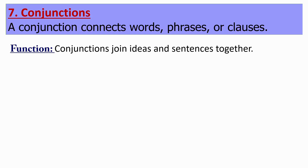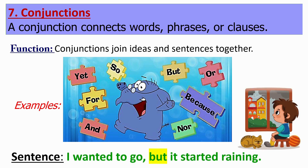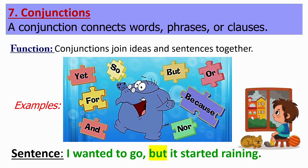Now let's check what are conjunctions. A conjunction connects words, phrases, or clauses. Conjunctions join ideas or sentences together. For examples: yet, so, but, or, because, nor, and, for, etc. Now let's check a sentence: "I wanted to go, but it started raining." In this sentence, but is the conjunction because it joins two sentences.